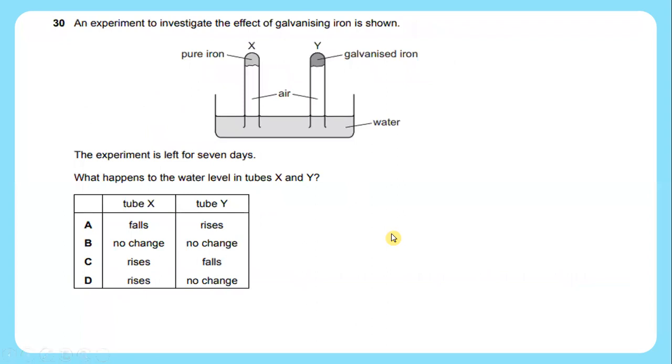Question 30: An experiment to investigate the effect of galvanizing iron is shown. The experiment is left for seven days. What happens to the water level in tubes X and Y? X consists of pure iron while tube Y consists of galvanized iron. In tube X, the water level will rise. Meanwhile in tube Y, there will be no change.